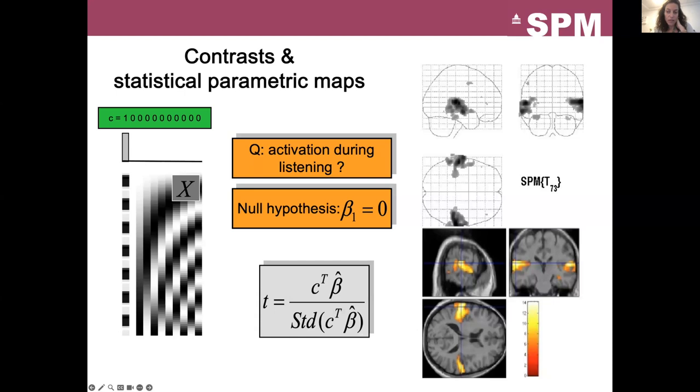Now we want to address the initial question. Is there an activation during listening? We can now run the statistical test to evaluate if the coefficient of the stimulus regressor is significantly different from zero in some regions. The t-score here is computed as follows, and you can see that it requires a good estimation of beta and its standard deviation. So a t-score is obtained for each voxel. At the end, a t-score map can be analyzed. High t-score suggests a high probability of an activation. And here we can observe high t-scores in the auditory cortex, which makes sense given the type of stimulus. And you will see the details of the stats in the next presentation.